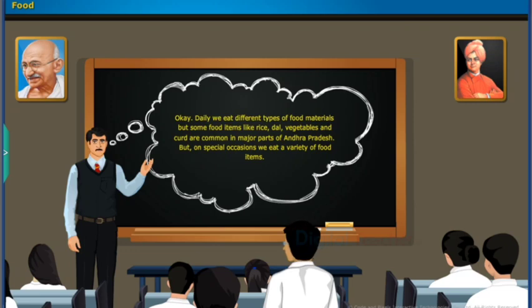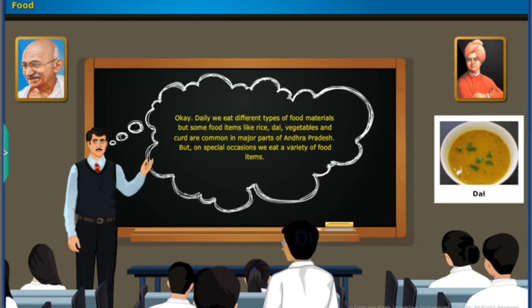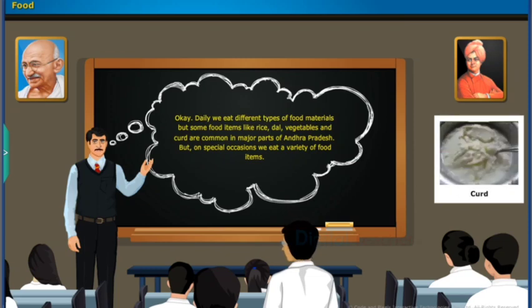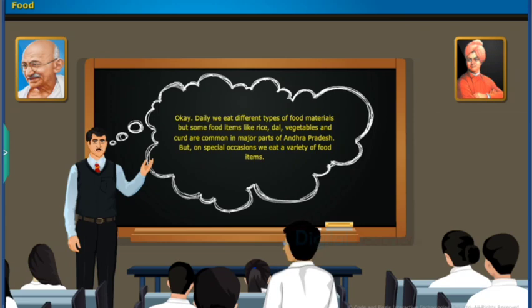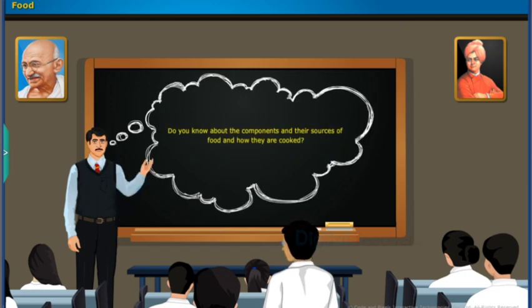Daily we eat different types of food materials. But some food items like rice, dal, vegetables and curd are common in major parts of Andhra Pradesh. But on special occasions, we eat a variety of food items. Do you know about the components and their sources of food and how they are cooked?